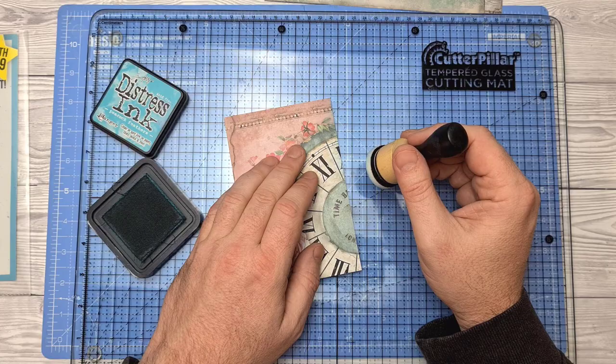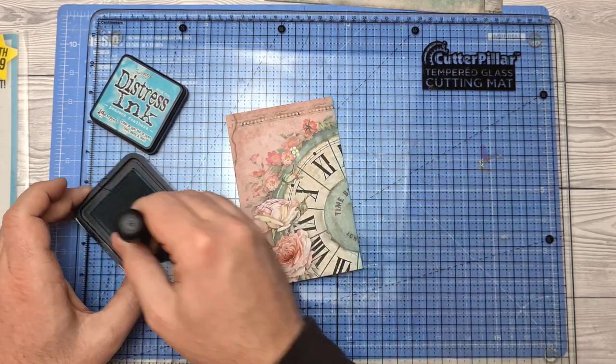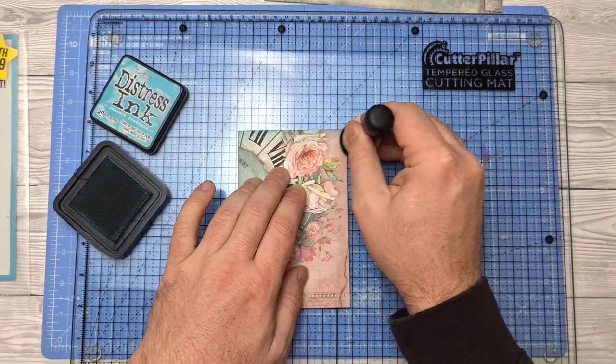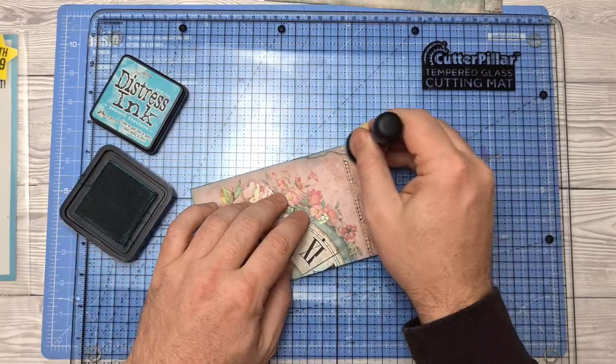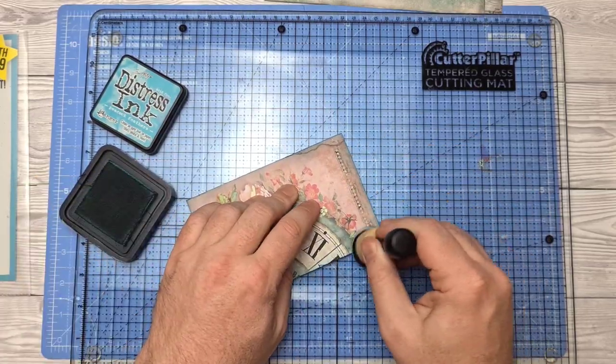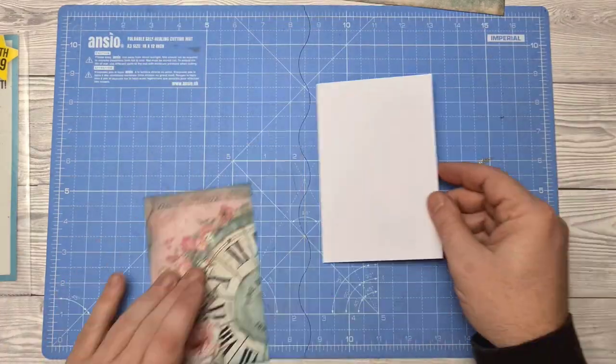I'm just using some Distress Ink to edge the paper to give it a bit more dimension. And I've chosen the Peacock Feathers as it worked well with the colour scheme on the papers themselves. And you can see that it kind of works well with that blue paper.